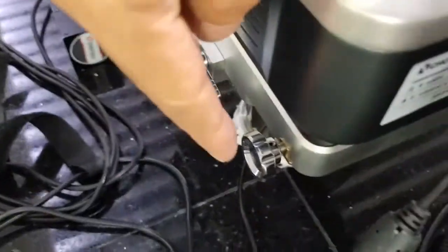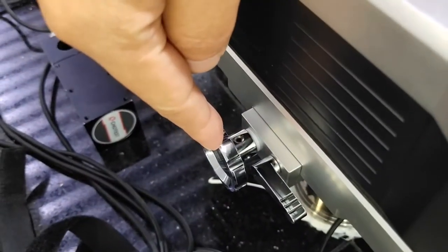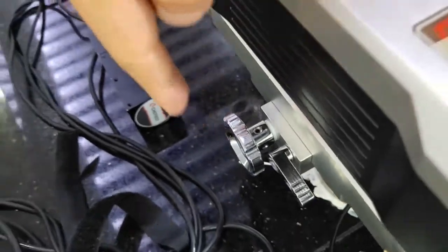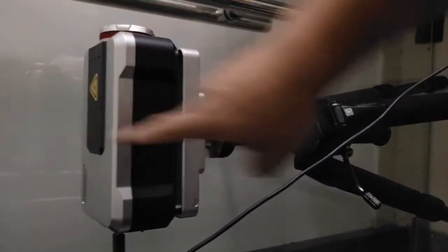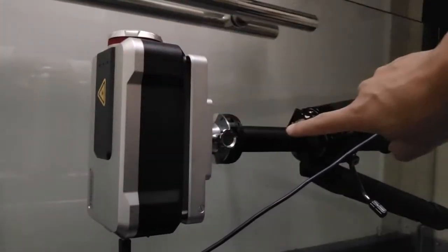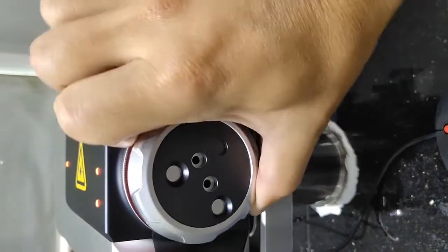This is pitch knob. This is yaw knob. Left and right. We use this knob to adjust up and down of the laser. The whole head can be rotated.